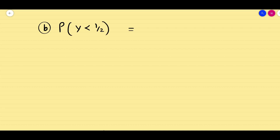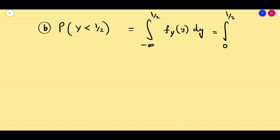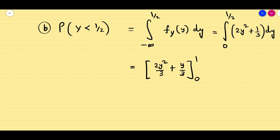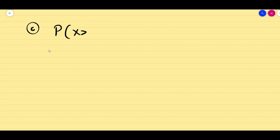Similarly for the second part, P(Y < 1/2): since Y < 1/2, the upper limit is 1/2. We integrate f_Y(y) from 0 to 1/2, which is integral of (2y² + 1/3) dy. Integrating gives 2y³/3 + y/3 evaluated from 0 to 1/2. Simplifying, the answer is 1/4.